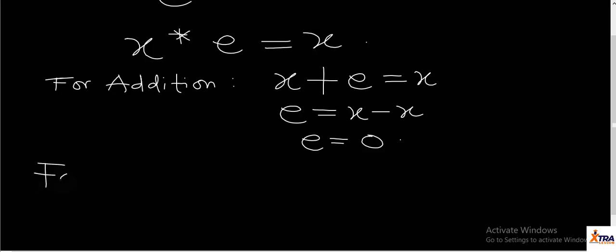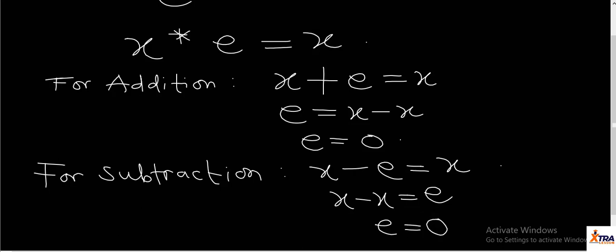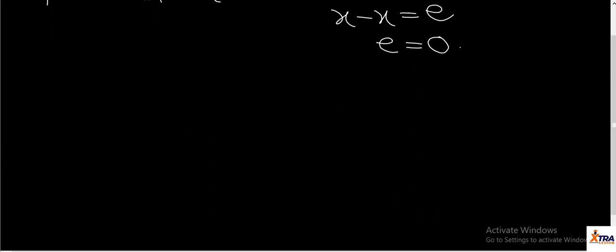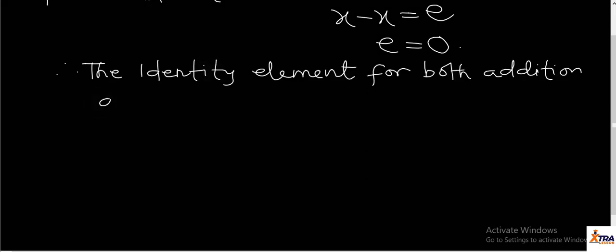Let's look at subtraction. For subtraction, if you have a particular variable X in a subtraction operation with the identity element, it must give you the variable X again. In order to determine the identity element, you can say X minus E equals X, which gives E equals zero. That means the identity element for both addition and subtraction is zero.